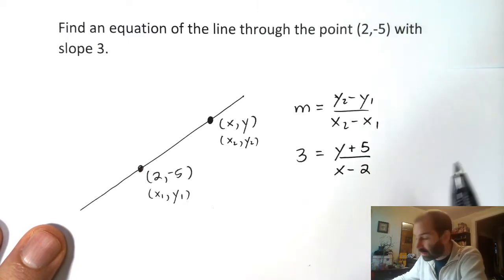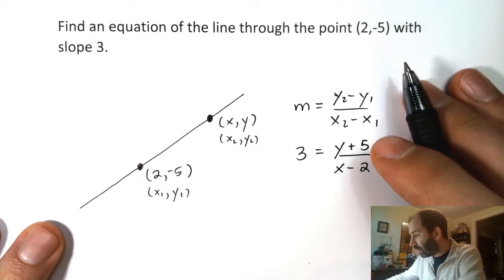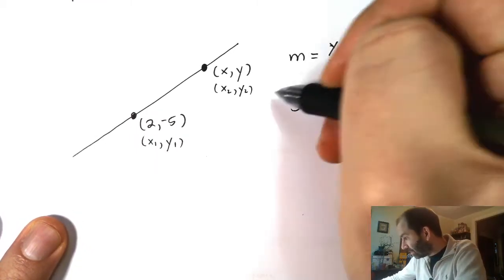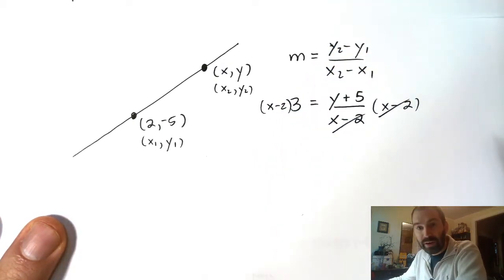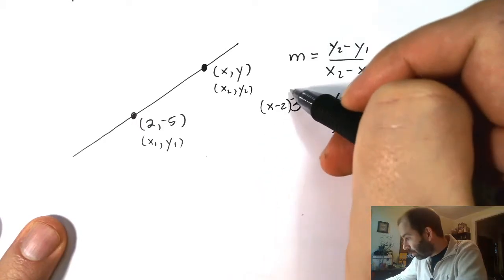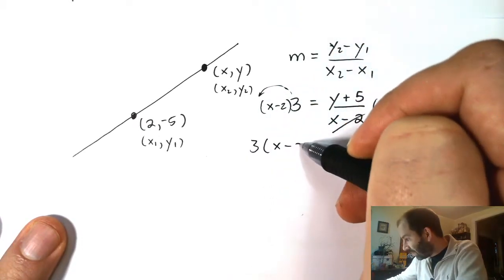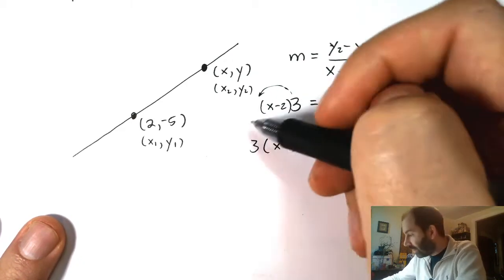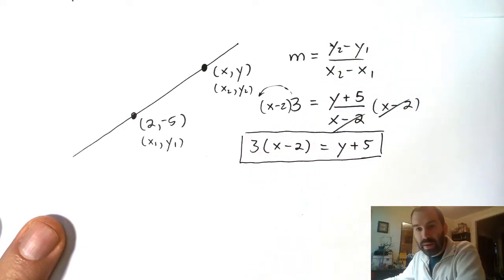What we're going to do is get rid of the denominator here — we're going to multiply both sides by (x minus 2). That will clear out the denominator. So if I move the 3 to the front, I have 3 times (x minus 2) equals y plus 5. There's an equation, and this is actually what we call the point-slope equation.